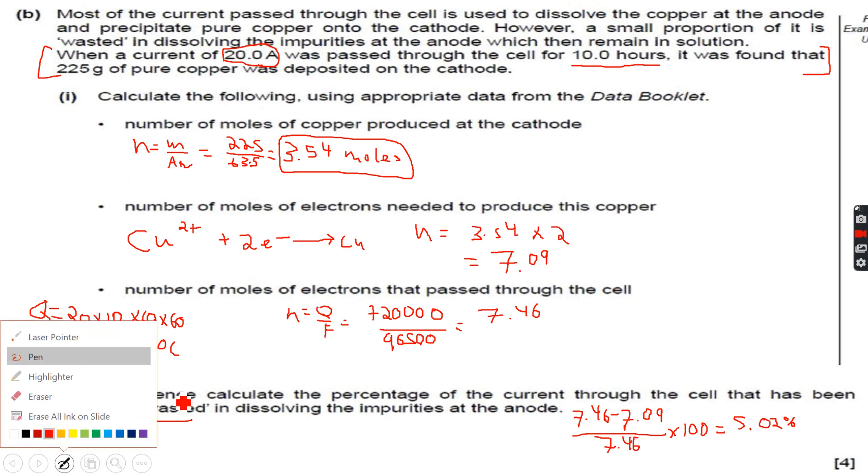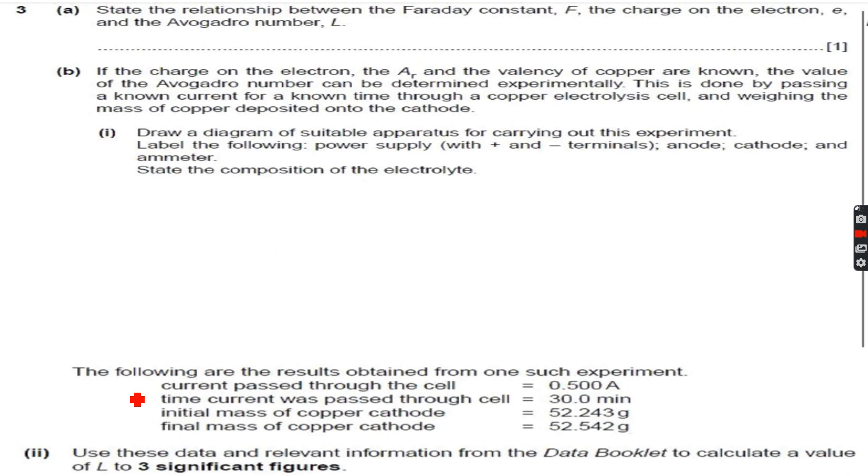So we are done with this question. Now let's move to the next question. State the relationship between the Faraday constant F, the charge on the electron e, and the Avogadro number L. So we know this is F equals L times e.